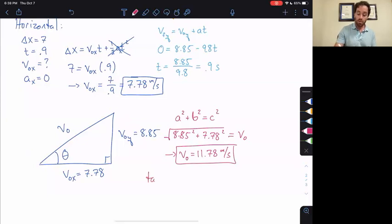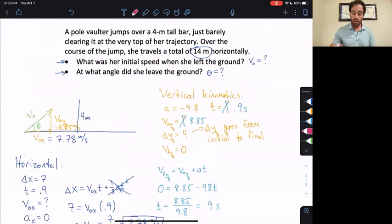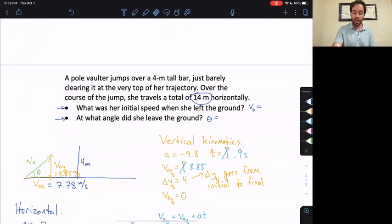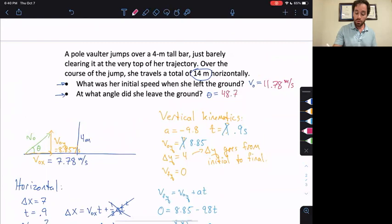Now, the tangent of theta equals opposite over adjacent, right? So, 8.85 over 7.78. That means theta itself will be equal to the inverse tangent of 8.85 over 7.78. This, in turn, is equal to, let's see, inverse tangent of 8.85 divided by 7.78. That is 48.7 degrees. This answers both questions. So, what was her initial speed? Initial speed was 11.78 meters per second. And the angle is 48.7 degrees.